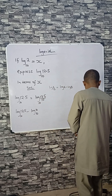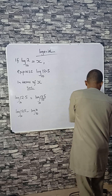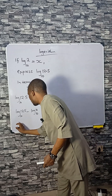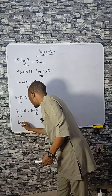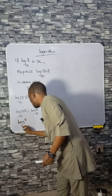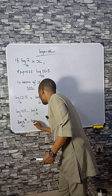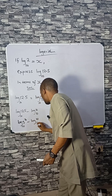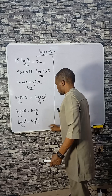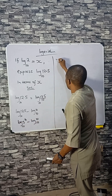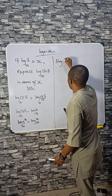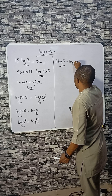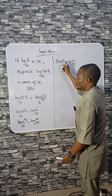Now, 125 is 5 cubed, so log 125 base 10 becomes log(5³) base 10. We bring the power down: 3 log 5 base 10 minus log 10 base 10.